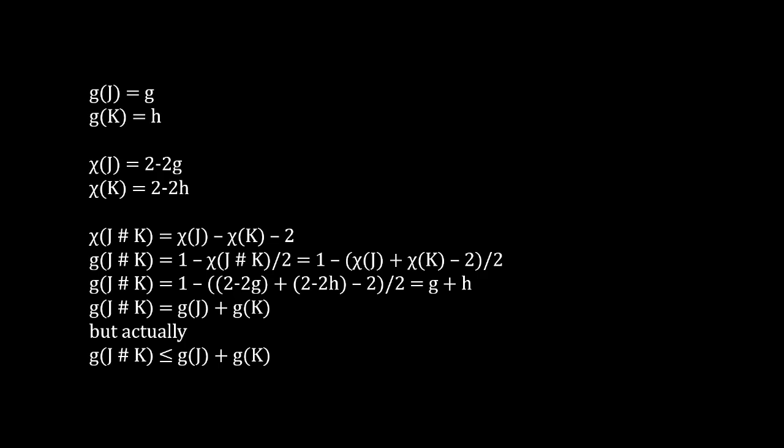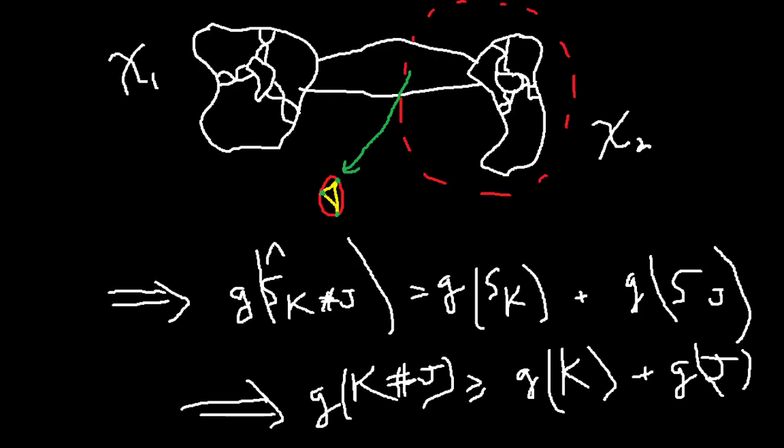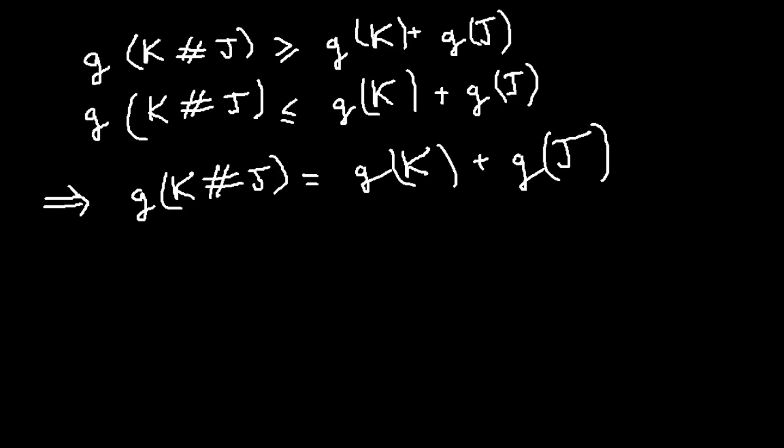Now we just need to establish the other inequality to establish the result. This involves going the other way and considering factoring a knot. If we have a minimal Seifert surface of the connected sum of J and K, then we can consider a sphere that factorises the knot, splitting this Seifert surface into two parts, then triangulate and work things out similarly to before. This gives us that the genus of J plus the genus of K is less than or equal to the genus of the connected sum. We have therefore shown both inequalities, so we get that the genus of the connected sum is the sum of the genuses.